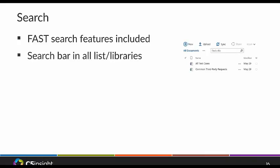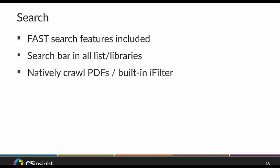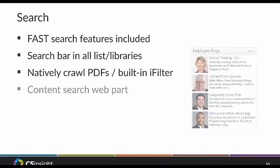One thing that's really helpful to me and to a lot of our clients is that now there's a contextual search bar built into every list or library. You don't have to set up filter web parts, make connections, or modify the view. This is just baked into every single list or library. Also, we can now natively crawl PDFs with a built-in iFilter — no need to install Adobe iFilters to have search look at the content of PDFs.